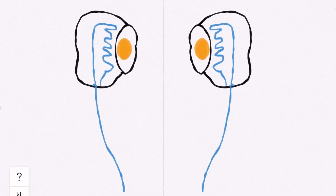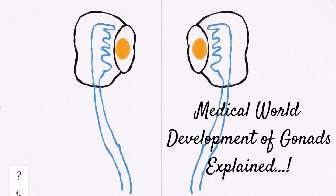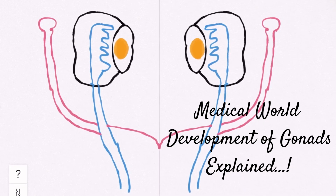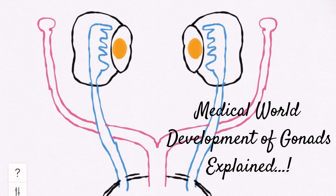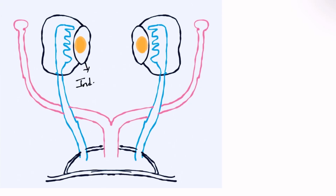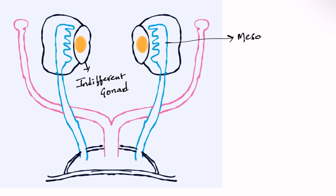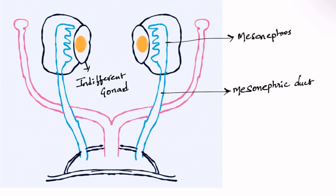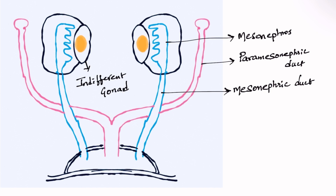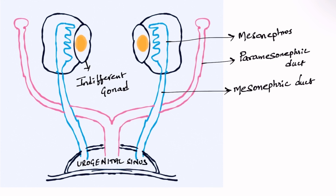Today we are going to discuss the development of gonads in males and females during fetal life. These are called indifferent gonads because they have not differentiated into male or female gonads until the seventh week of fetal life. From the seventh week onwards, differentiation occurs. The blue structure is the mesonephros, which is the embryonic kidney, and its duct is called the mesonephric duct. The pink one is called the paramesonephric duct — remember: P for pink, P for paramesonephric duct, and it is associated with females. The base is called the urogenital sinus.